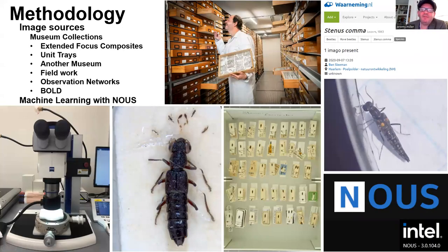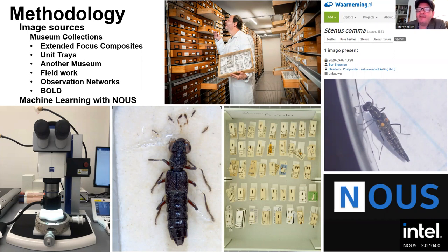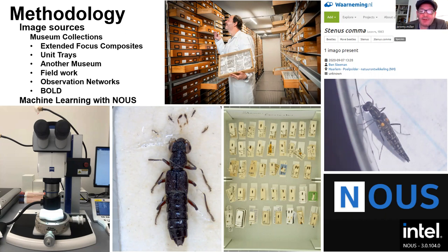For this project, we used beetle specimens from the Naturalis Biodiversity Center collection in Leiden. Stenus beetles in natural history collections are typically mounted on pinned cards or points and stored as dry specimens. We deliberately selected specimens with a range of preservation quality — as opposed to just picking the cleanest and prettiest specimens — to get a realistic idea of both the power and the limitations of museum collections as a source for machine learning image libraries. Images of unmounted specimens from recent fieldwork were also combined with image libraries based on mounted museum specimens. We used the machine learning application Noose to build and test our models.